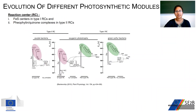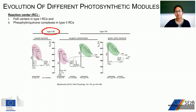The first module is the photosynthetic reaction center — the heart of photosynthesis where the primary energy conversion reaction happens. Reaction centers are composed of several proteins, pigments, and other cofactors. Based on the early electron acceptor cofactors, there are two types: iron-sulfur centers, i.e. Type 1, and pheophytin-quinone complexes, i.e. Type 2. Anoxygenic phototrophs have just one type — either Type 1 or Type 2 — while all oxygenic phototrophs, including cyanobacteria, have both types.